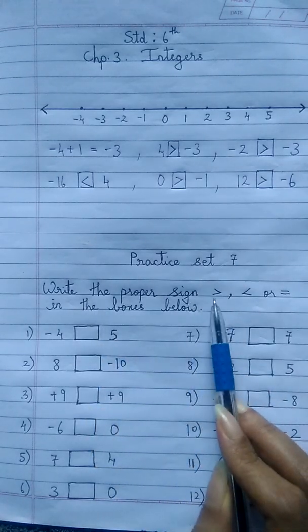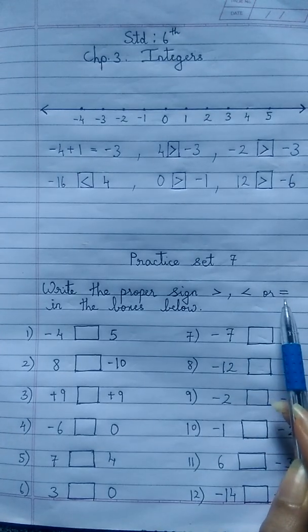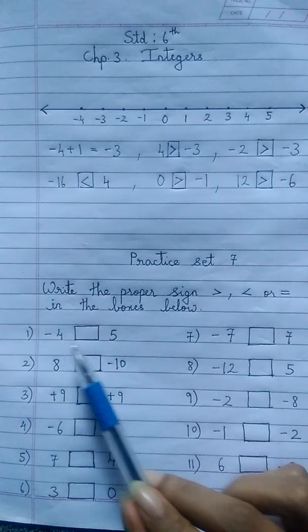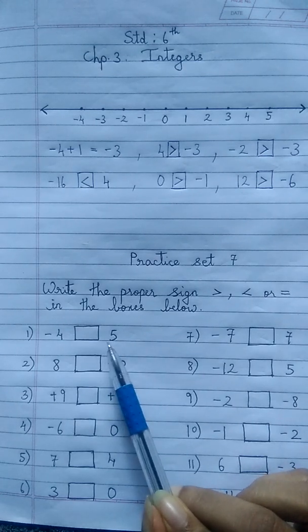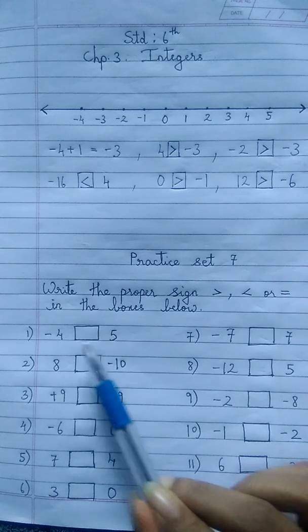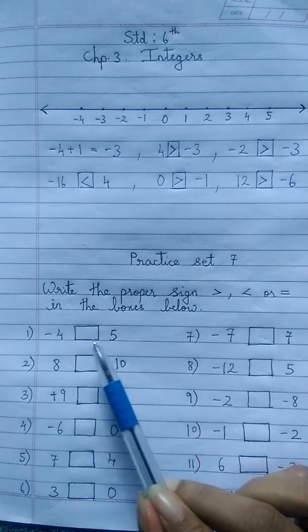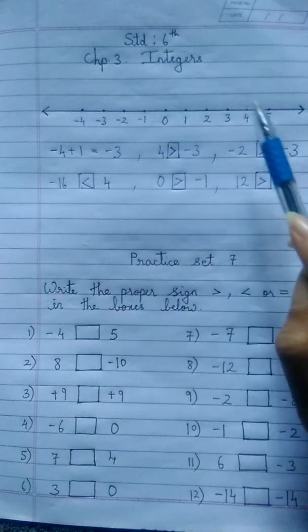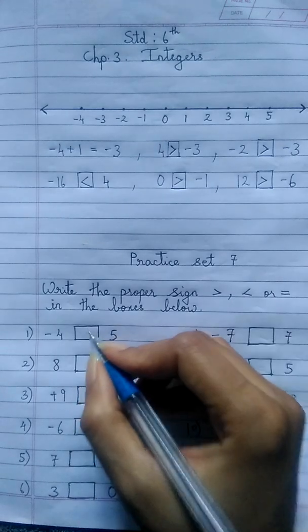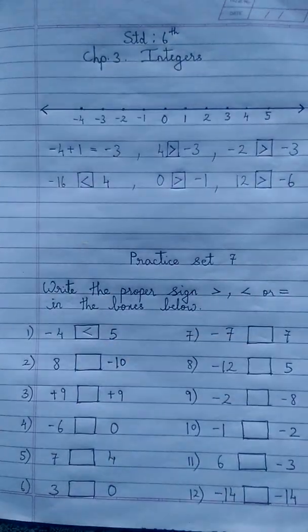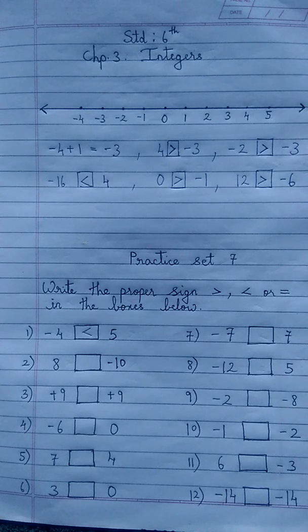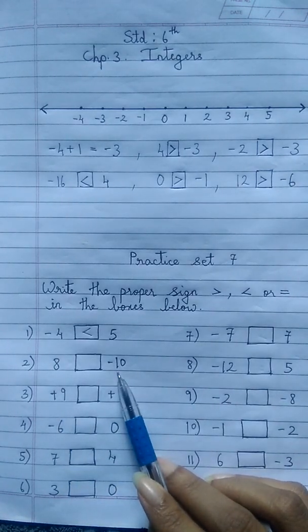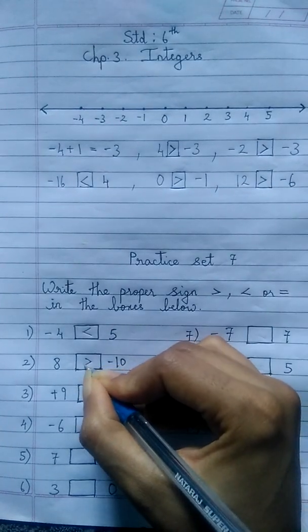Practice Set 7: Write the proper sign — greater than, less than, or equal to — in the boxes below. First: minus 4 and 5. A positive number is greater than a negative number, and on the number line minus 4 is to the left and 5 is to the right. So minus 4 is less than 5. Second: 8 and minus 10. Positive is greater than negative, so 8 is greater than minus 10.